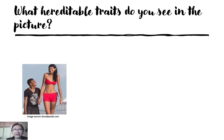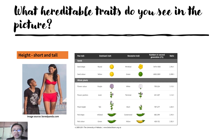What heredity traits do you see in the picture? We have height, which is short and tall. Take a look at this chart. What are the heredity traits that you see in the pea plant? We have seed shape, seed color, flower color, flower position, plant height, pod shape, and pod color.